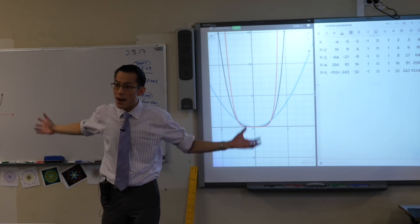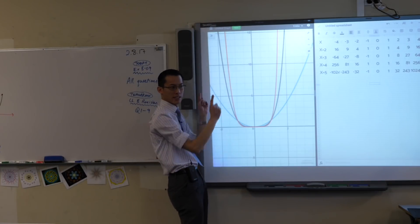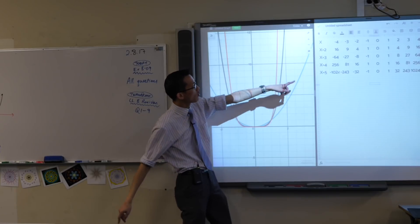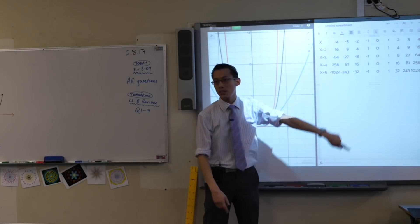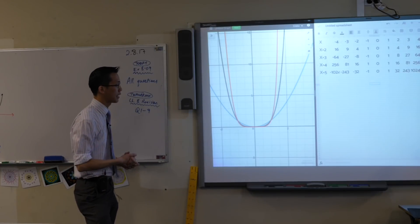Do you notice how everything is positive? Absolutely everything. It's all above the x-axis. Everything's going up. And that corresponds to the fact that for these even powers, the numbers are all positive, no negative signs in sight.